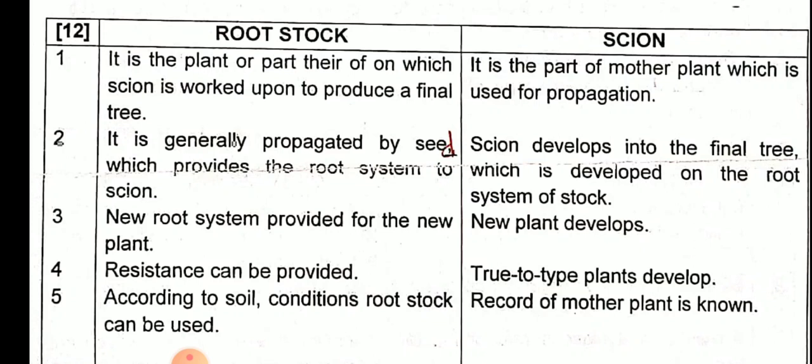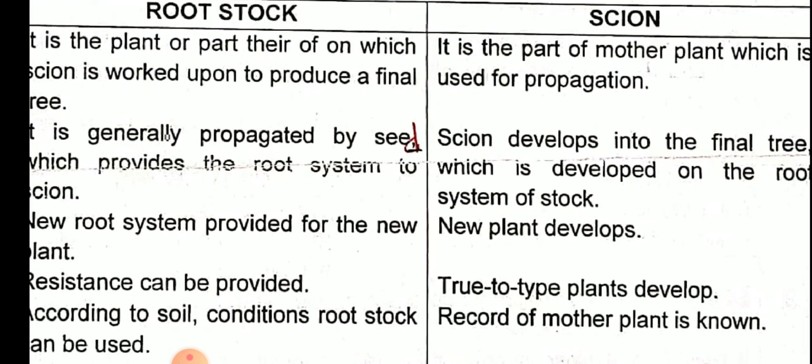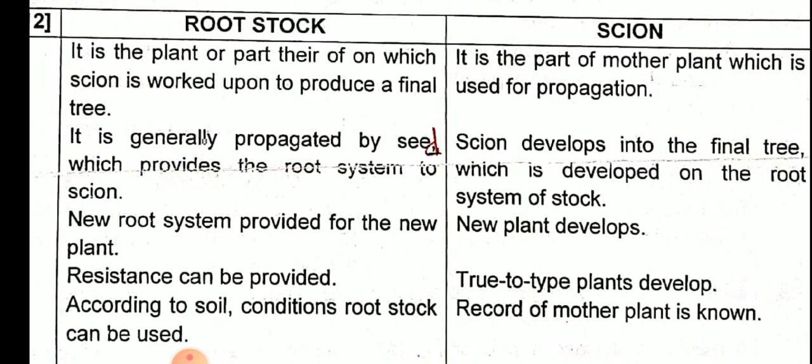Third point: root stock provides a new root system for the new plant. The scion provides and develops a new plant. Fourth point: resistance to certain disorders, diseases, and pests can be provided by the root stock. The scion gives true-to-type plants, meaning the parent characteristics are maintained.